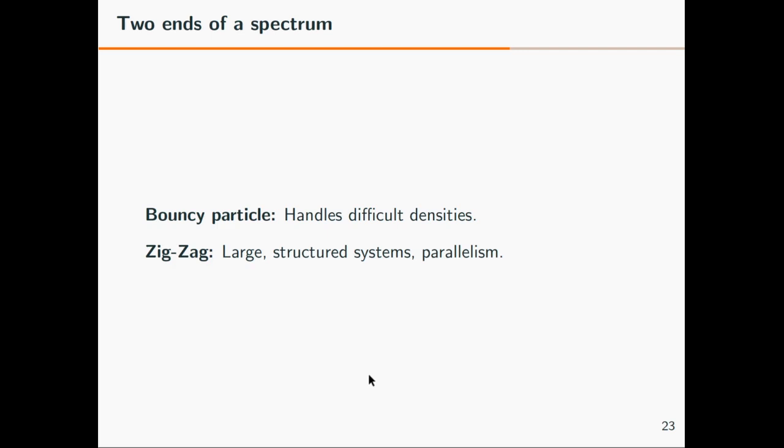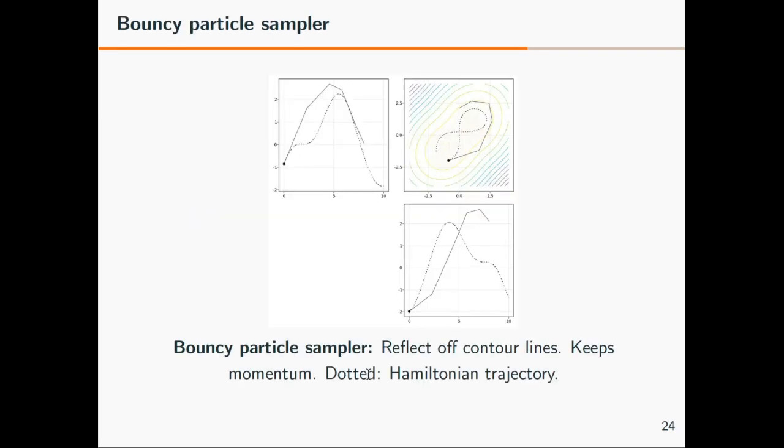These two samplers, both the bouncy and the zigzag, are on different ends of the spectrum. The bouncy particle is good because it handles difficult densities. The zigzag has a nice property if applied to large structured systems and allows us to do the parallelism I'm talking about. Let's look at the bouncy particle sampler—why is it good on complicated densities? Because the reflection on contour lines does not destroy the momentum. Even if you reflect you still keep going in a reasonable direction. You see this here: the trajectory in 2D in black of the bouncy particle gets the particle around the density, similar to the Hamiltonian dynamics in dotted, where following Hamiltonian dynamics your particle explores quite well the different regions of the density. That's the basis of Hamiltonian Monte Carlo methods.